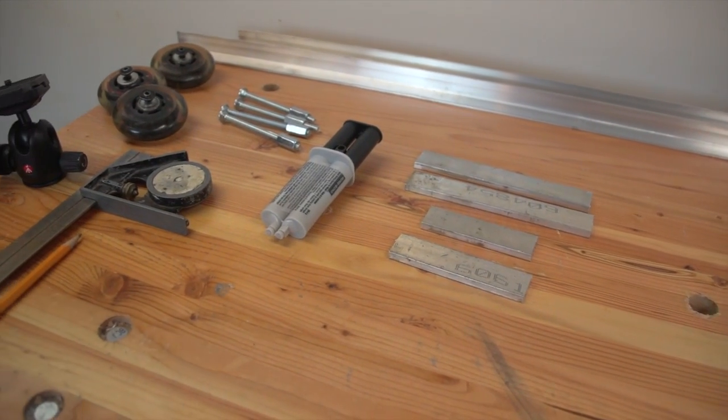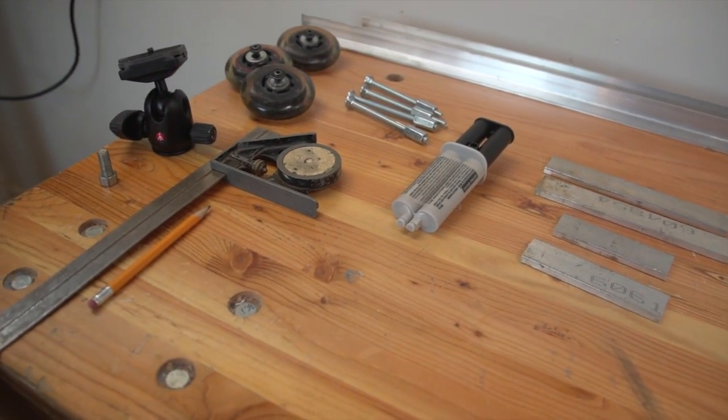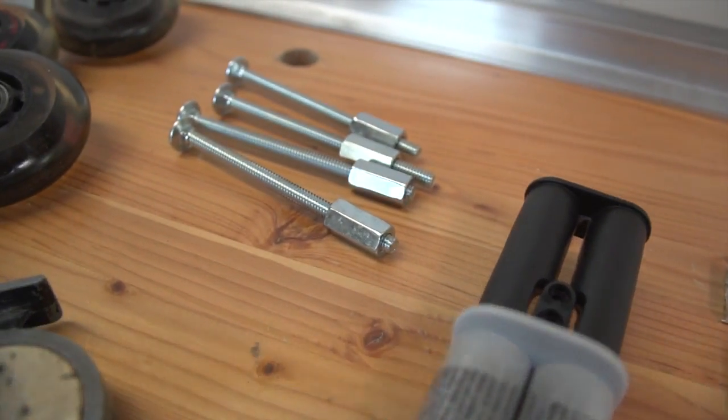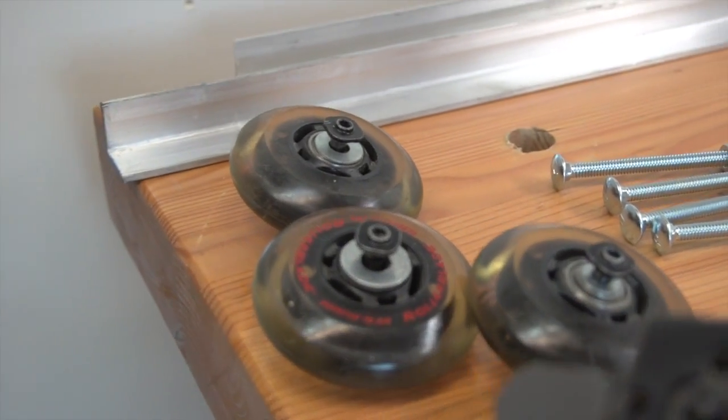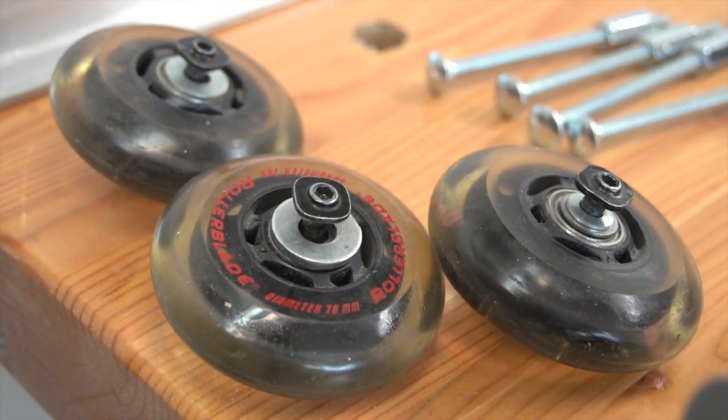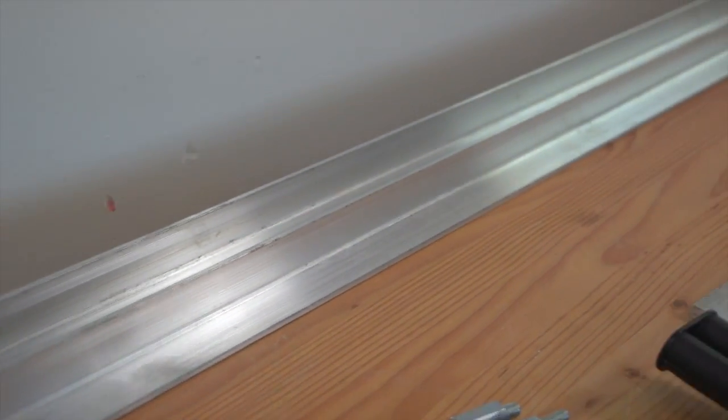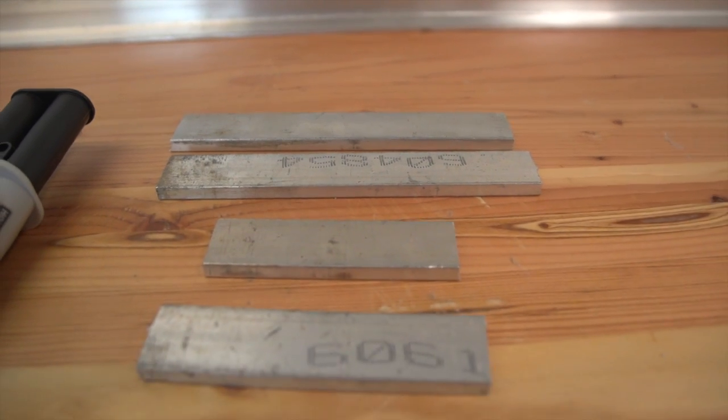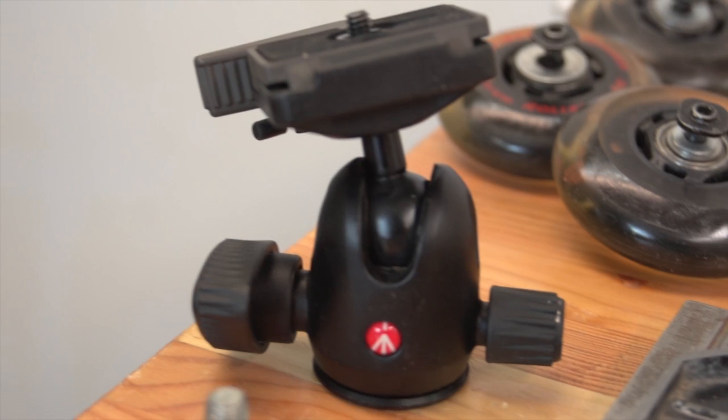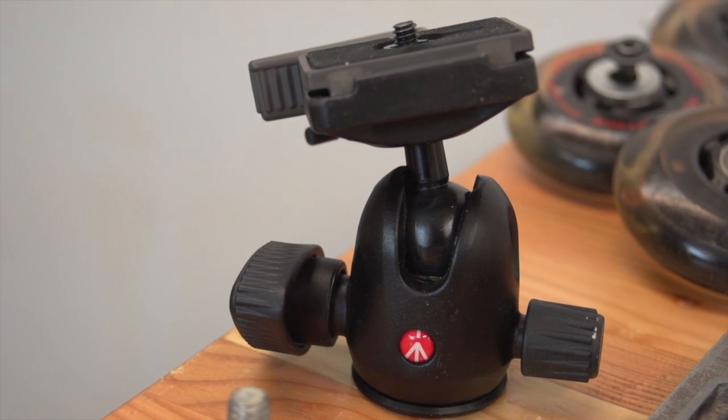Start things off by gathering together all the materials for this project. You'll need 4 bolts with coupling nuts roughly the same size as I have here. You'll need 3 roller blade wheels with mounting hardware. I'm using ones with 76mm diameters. You'll need 6 feet of 1 inch by 1 inch by 1 eighth of an inch angle aluminum and 2 feet of 1 inch by 1 quarter of an inch aluminum flat bar, some 5 minute epoxy steel and a tripod head and bolt to mount it.